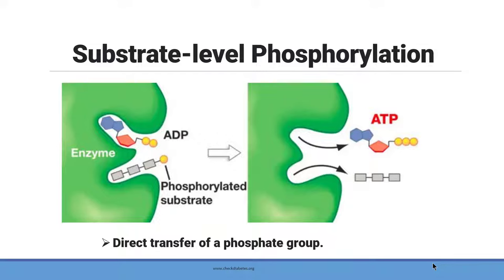Let's discuss substrate-level phosphorylation in a little more detail. Substrate-level phosphorylation means a direct transfer of a phosphate group from a substrate to ADP. As you can see in this picture, we have an enzyme with two different sites — one side is occupied by a substrate that has a phosphate group attached to it, and the other side is occupied by adenosine diphosphate. With the help of the enzyme, this phosphate group is going to get directly transferred from the substrate into ADP, converting it into adenosine triphosphate.